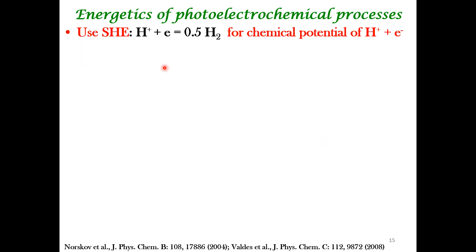Because of the equilibrium present in a standard hydrogen electrode, we were able to relate the chemical potential of proton plus the chemical potential of electron to this chemical potential. We did this because computing these things directly are very difficult in DFT — they exist in solution, at the electrode, and so on. But this is a simple calculation. In most processes, the proton and electron appear together.